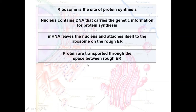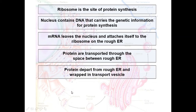Protein dah dibuat oleh ribosome, sekarang masuk ke dalam rough endoplasmic reticulum. Once the protein reaches the end of the rough endoplasmic reticulum, the proteins are wrapped in transport vesicles and bud off from the rough endoplasmic reticulum, dan dia pergi belayar.